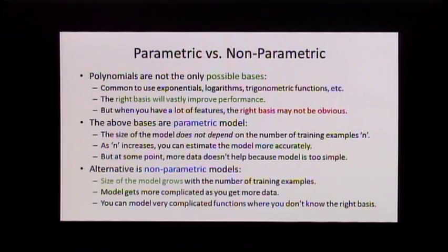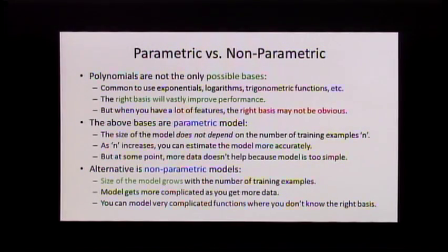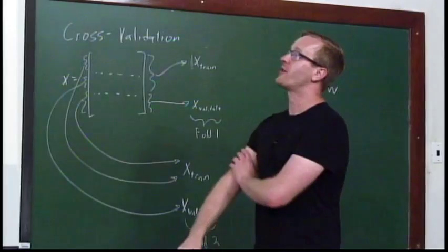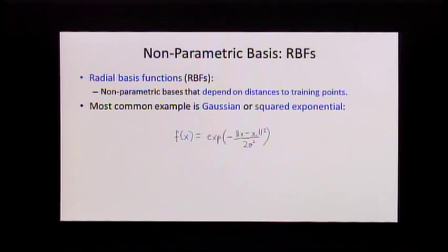The alternative is a non-parametric basis, where the size of the model grows with the number of training examples. This lets you model very complicated functions where you don't know the right basis, if you have lots and lots of data. The example I like to give is sports — like LeBron James or Steph Curry. When you're a little kid you can try to bounce the ball and you're terrible, but the more you do it the more complicated things you can do. Steph Curry can do amazing things because he's collected so much data that he's operating in a more complicated parameter space.